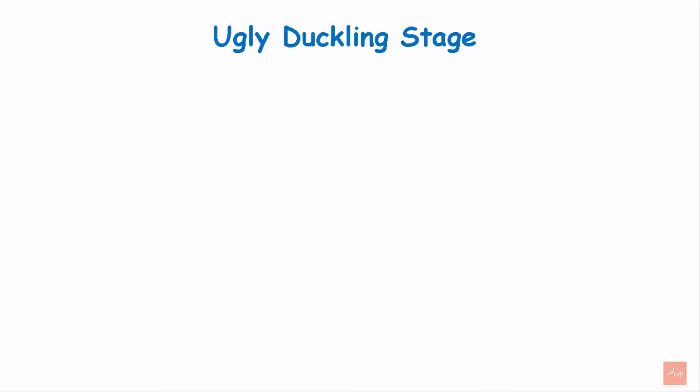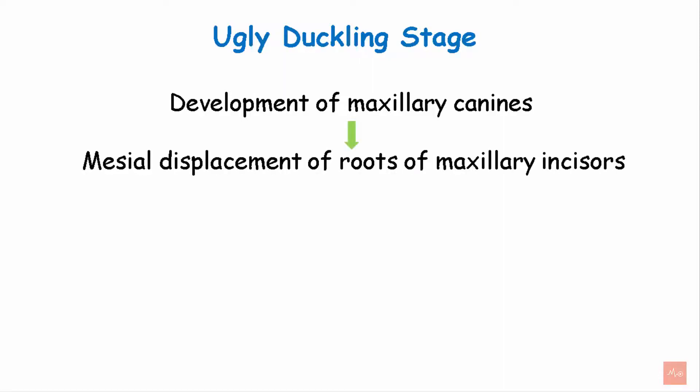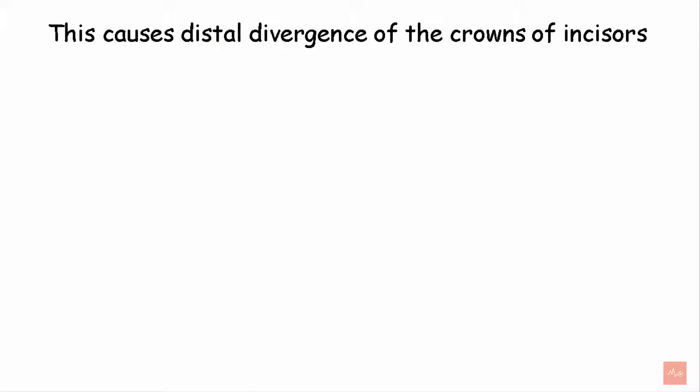Now let's see what all happens in the Ugly Duckling Stage. The developing permanent canines, especially the maxillary canines, often cause the mesial displacement of the roots of permanent incisors up to the age of 8–12 years. So these are the canines that start to push the roots of the incisors mesially. This causes a distal divergence of the crown of these incisors.